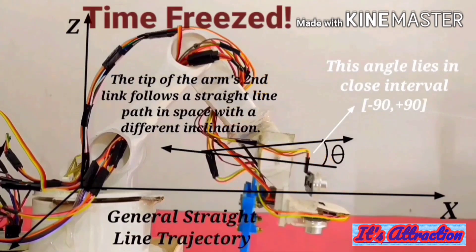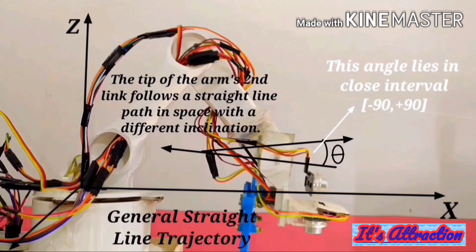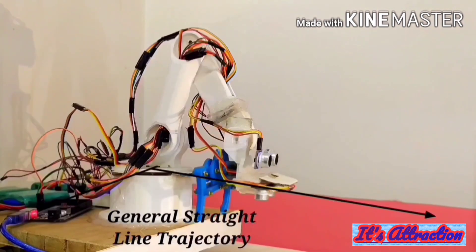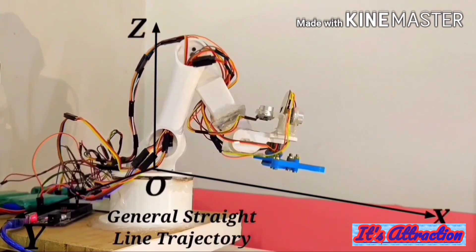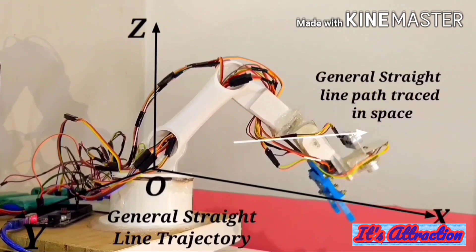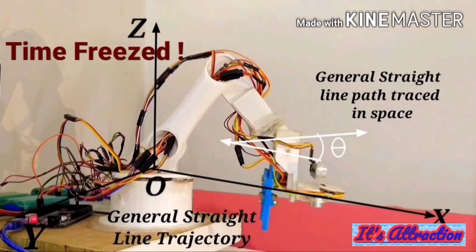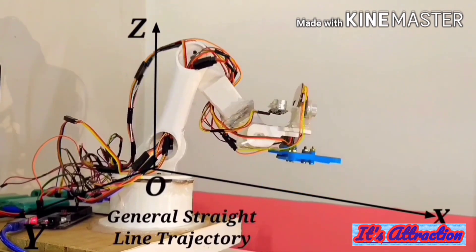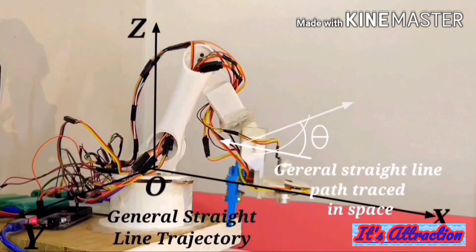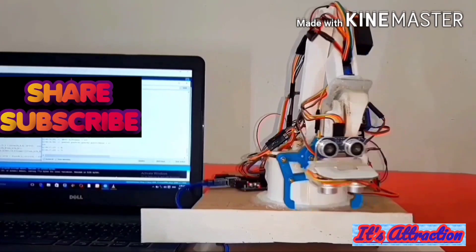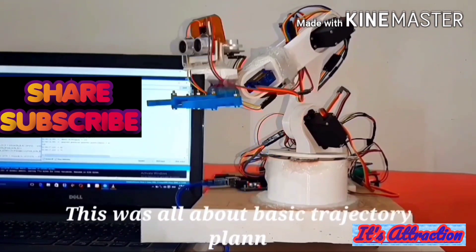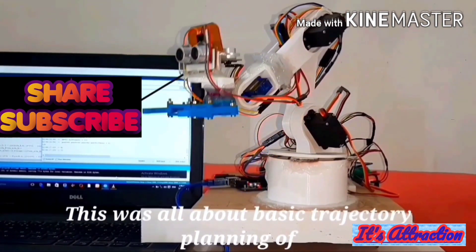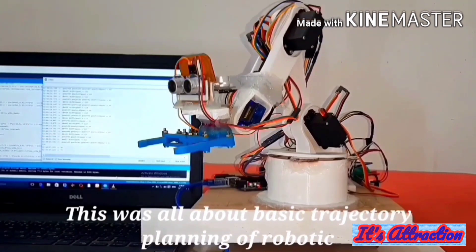This angle theta can take any value from minus 90 degrees to plus 90 degrees autonomously using the inverse kinematics in those cases where the objects' orientations around the robotic arm are simple, whereas in those cases where the objects' orientation around the arm is complex, the value of the angle theta can be assigned in its programming to execute the desired general straight line trajectory in space.